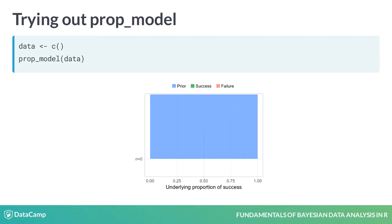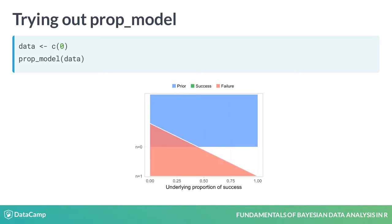Now let's add a data point. Let's say this is from an experiment on whether patients got cured by a new drug. Unfortunately, the first patient didn't get cured, marked red here for failure. The model now knows that a high proportion of success is improbable, because if it would have been high, we should have cured this first patient too. The second patient got cured. Now the model knows that the proportion of success is improbable to be close to zero or close to one.